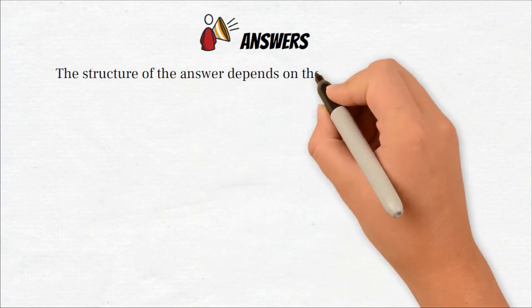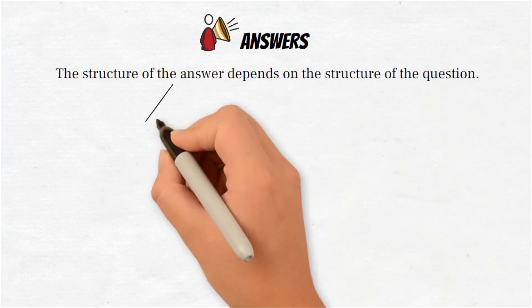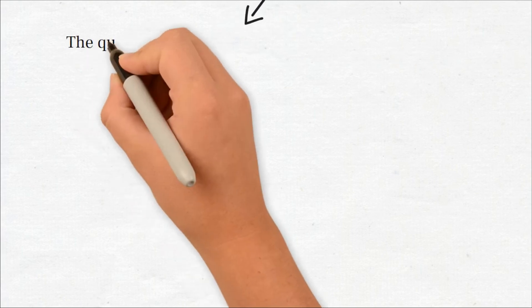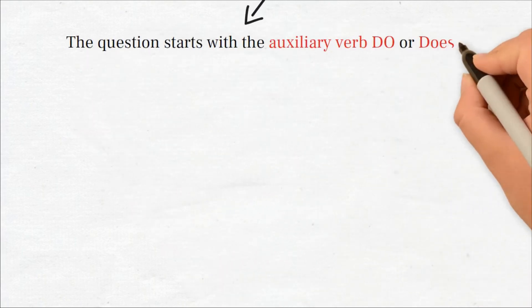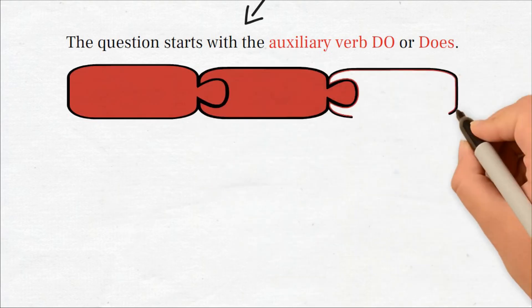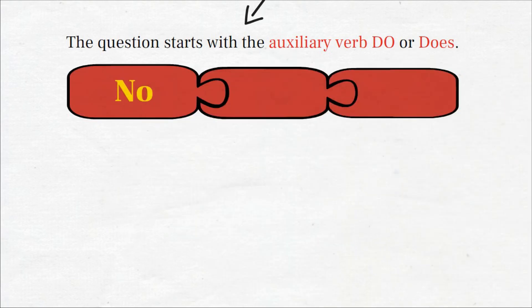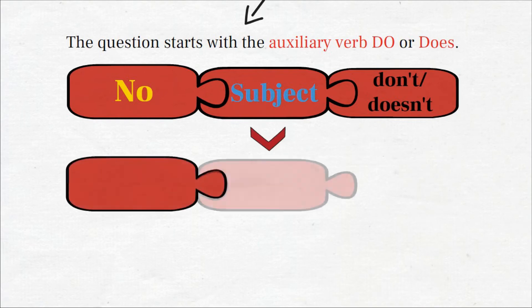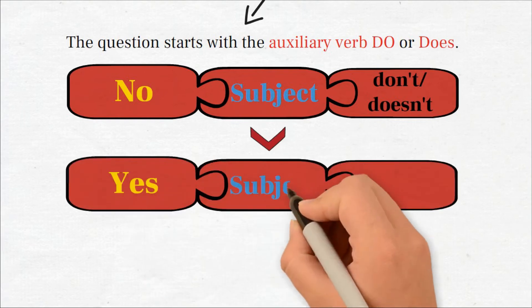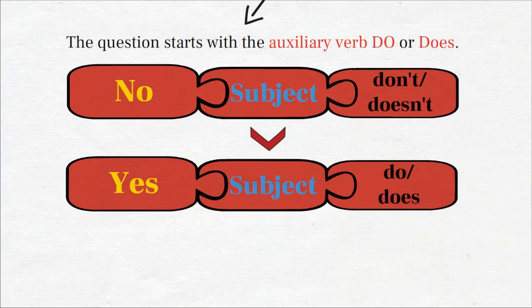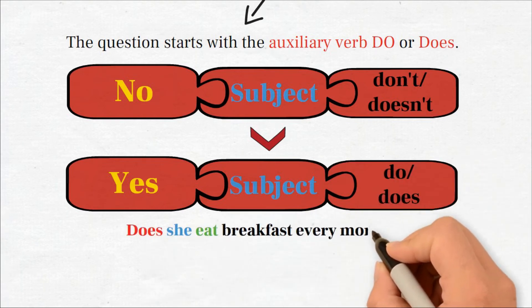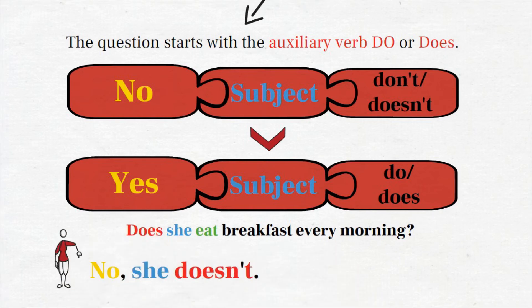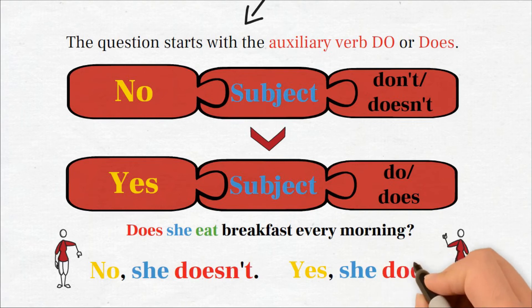Okay, let's now see how to form answers to these questions. The structure of the answer depends on the structure of the question. If the question starts with the auxiliary verb do or does, then the structure of the answer is: no, subject, don't or doesn't, or yes, subject, do or does. Does she eat breakfast every morning? No, she doesn't, or yes, she does.